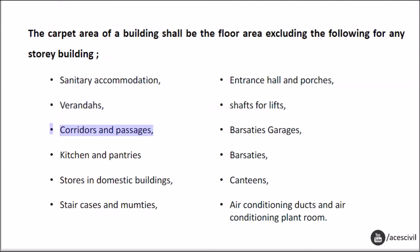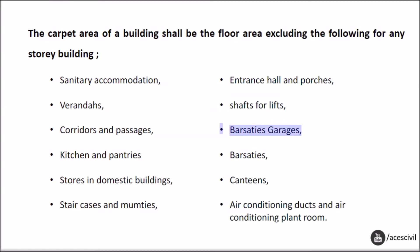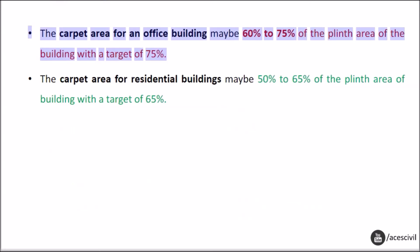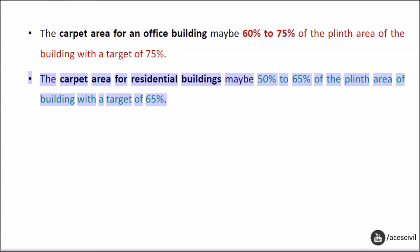The carpet area of a building shall exclude, for any storey: sanitary accommodation, verandas, corridors and passages, kitchen and pantries, stores in domestic buildings, staircases and mumties, air conditioning ducts and air conditioning plant rooms. The carpet area for an office building may be 60% to 75% of the plinth area, with a target of 75%. The carpet area for residential buildings may be 50% to 65% of the plinth area, with a target of 65%.